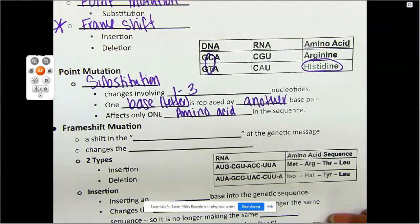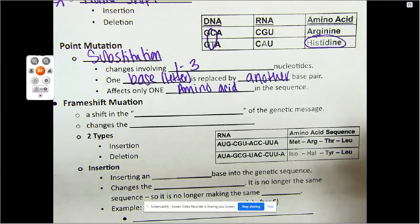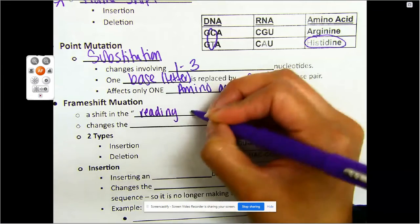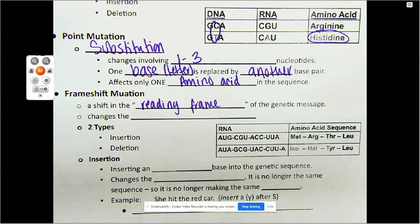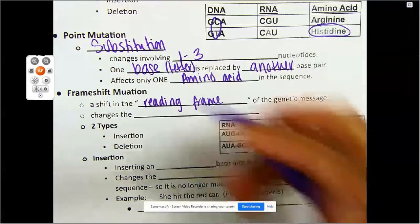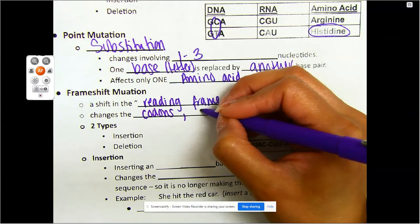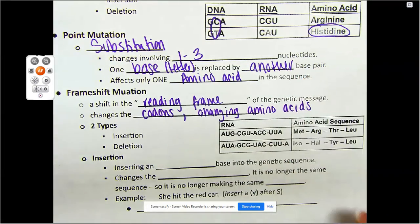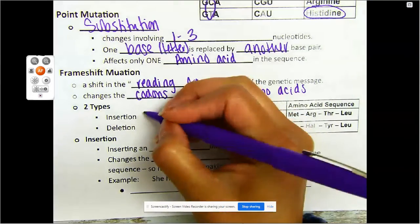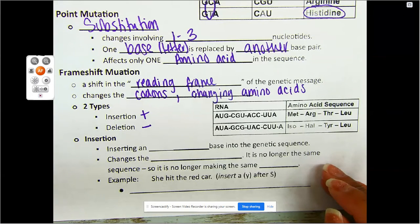Frame shift mutation, as I had mentioned, is the one that causes the most issues. It's going to be a shift in the reading frame of your genetic message — I am changing the way that I read my sequence, ultimately changing your amino acids. There are two types: insertion, which means to add a base pair, and deletion, to take away.